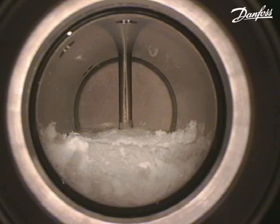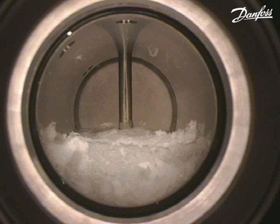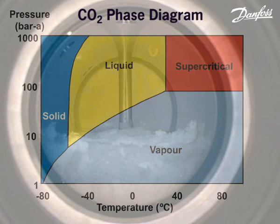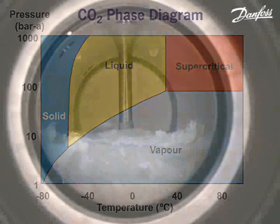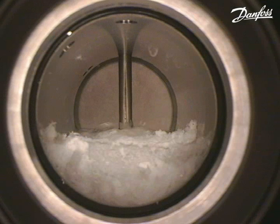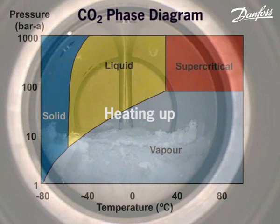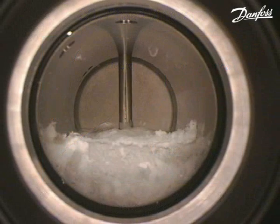As the pressure continues to fall below the triple point, only solid and vapour are present in the cell. Solid CO2 is also known as dry ice. It has a surface temperature of minus 78.4 degrees C at standard atmospheric pressure. The pressure inside the cell is now approximately equal to the surrounding atmosphere of 1 bar absolute. The vent valve is closed.